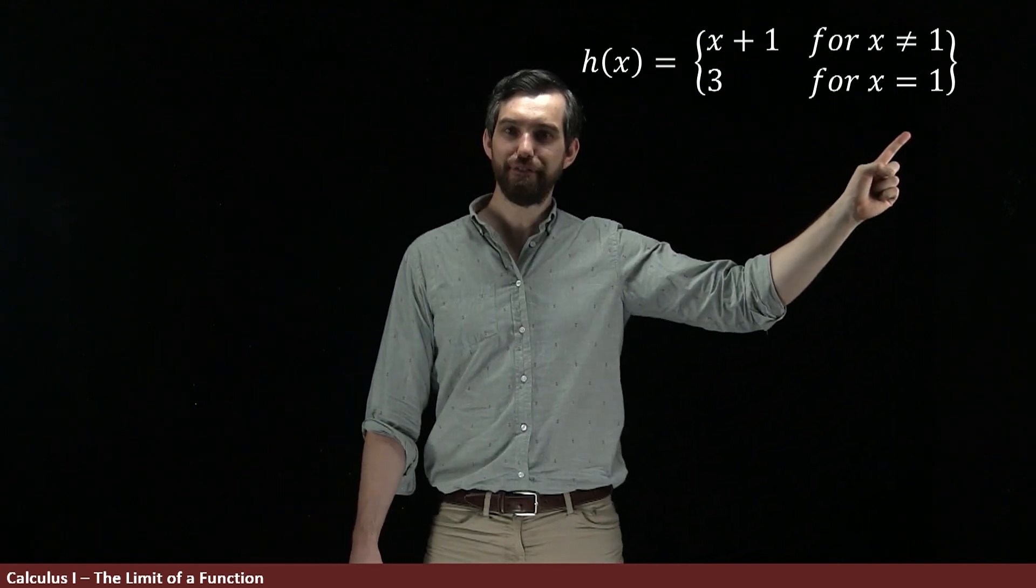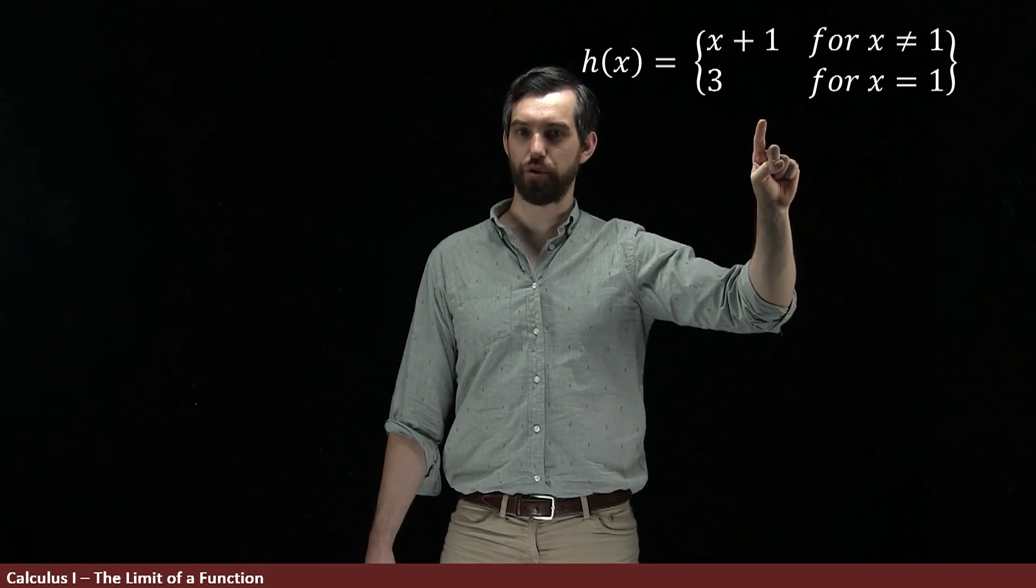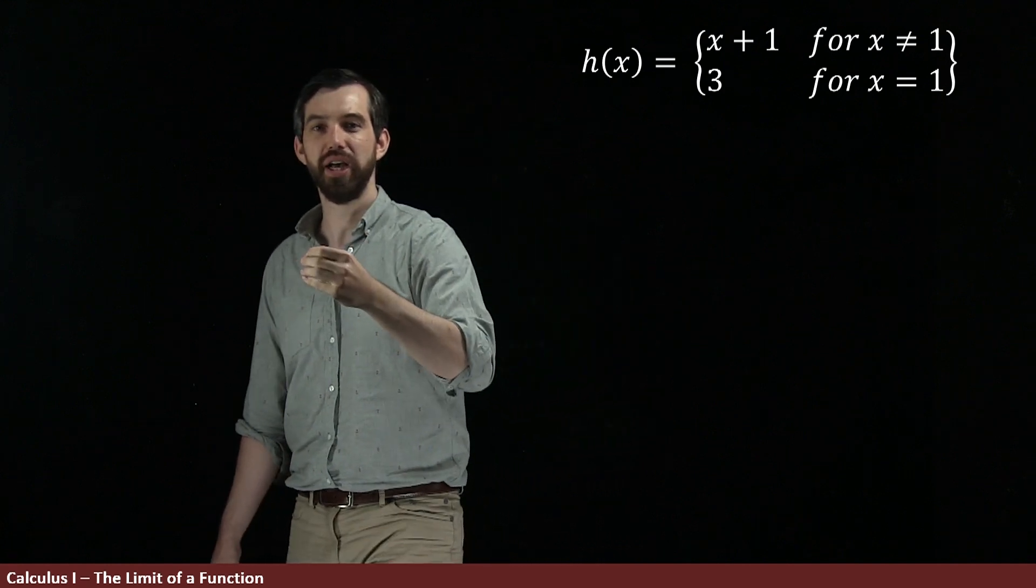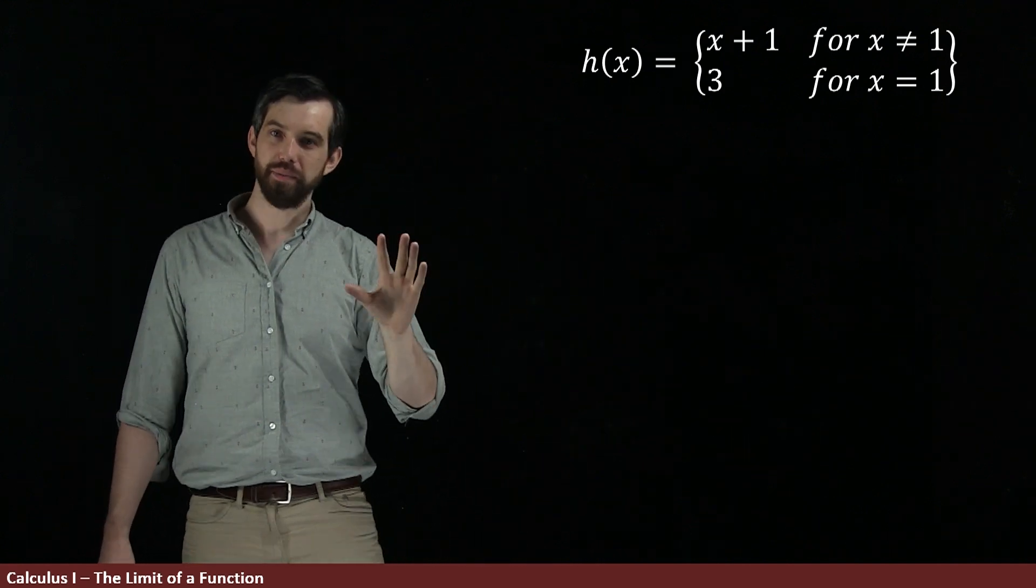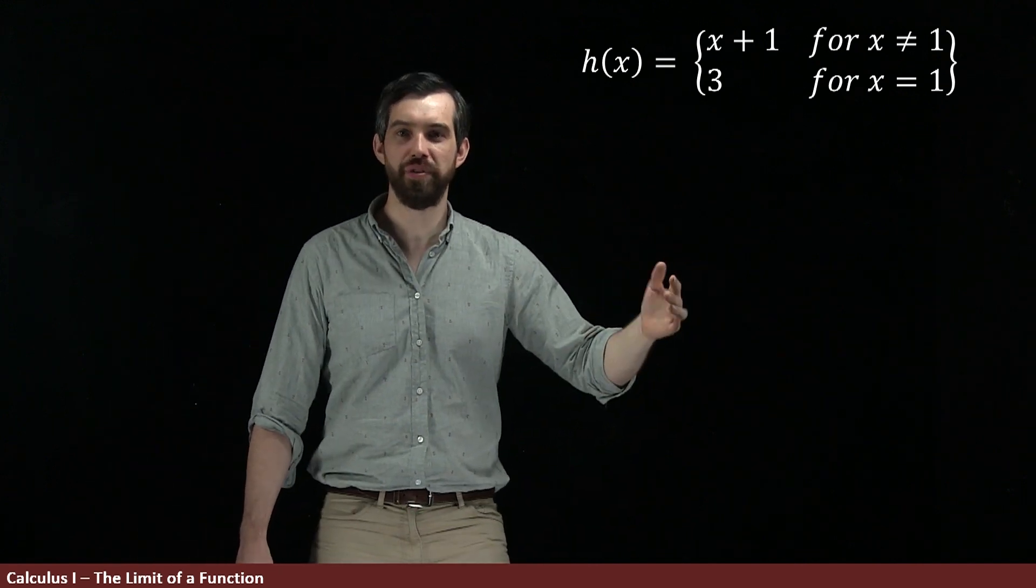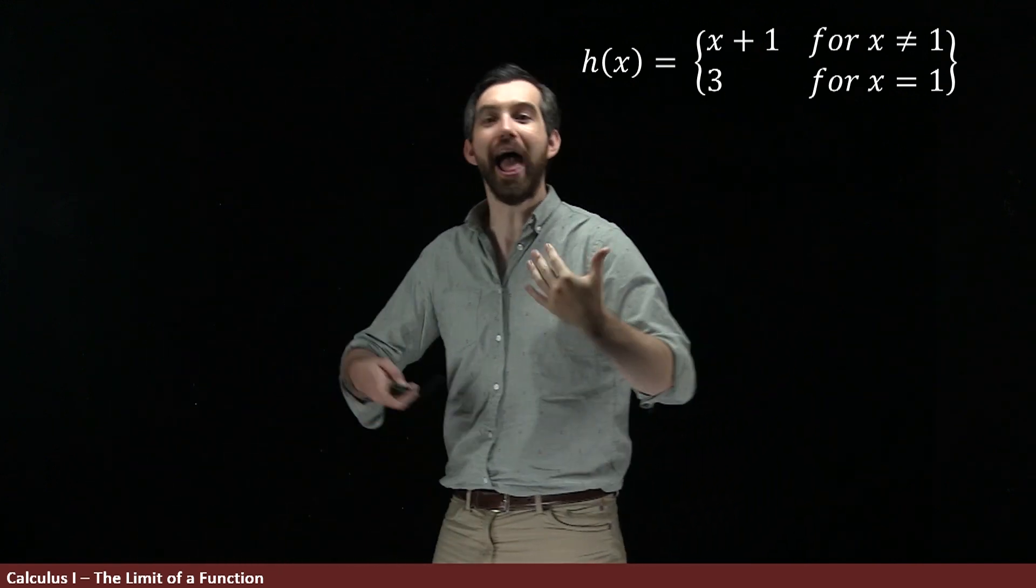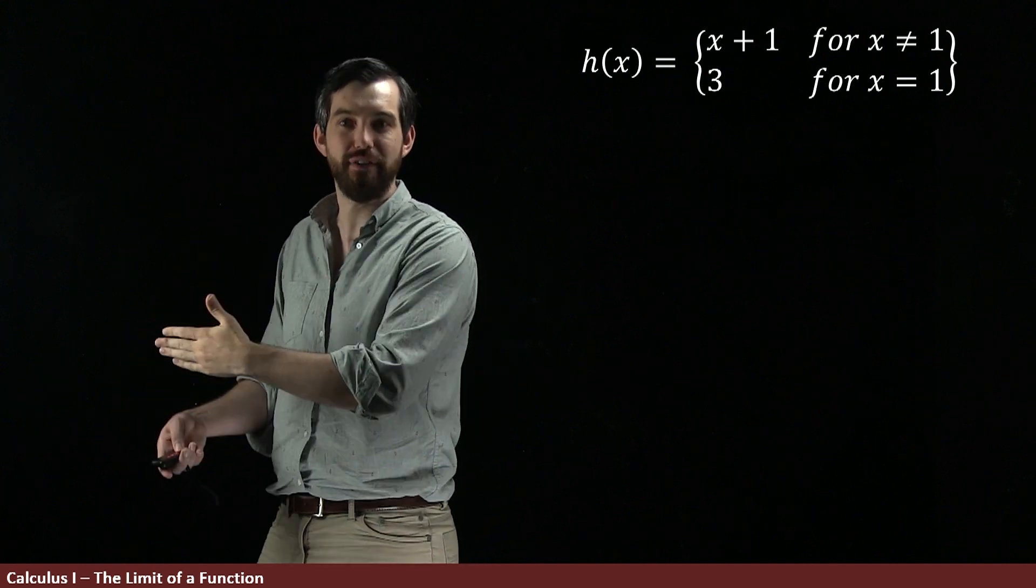So, for the exact value of 1, it's going to be 3, and what this means is that h of 1 is equal to 3. But then if I have any other value, the h is just equal to x plus 1, and x plus 1 is that same function f of x.